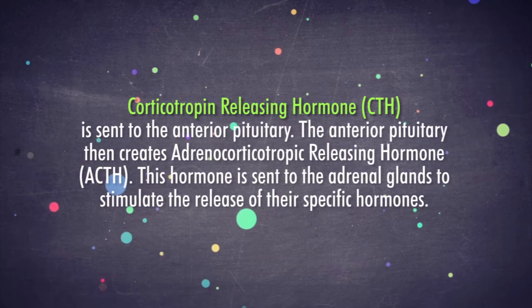The anterior pituitary then creates follicle-stimulating hormone, FSH, and luteinizing hormone, LH. These hormones are sent to the reproductive organs to stimulate them to produce their specific hormones. Corticotropin-releasing hormone, CRH, is sent to the anterior pituitary.